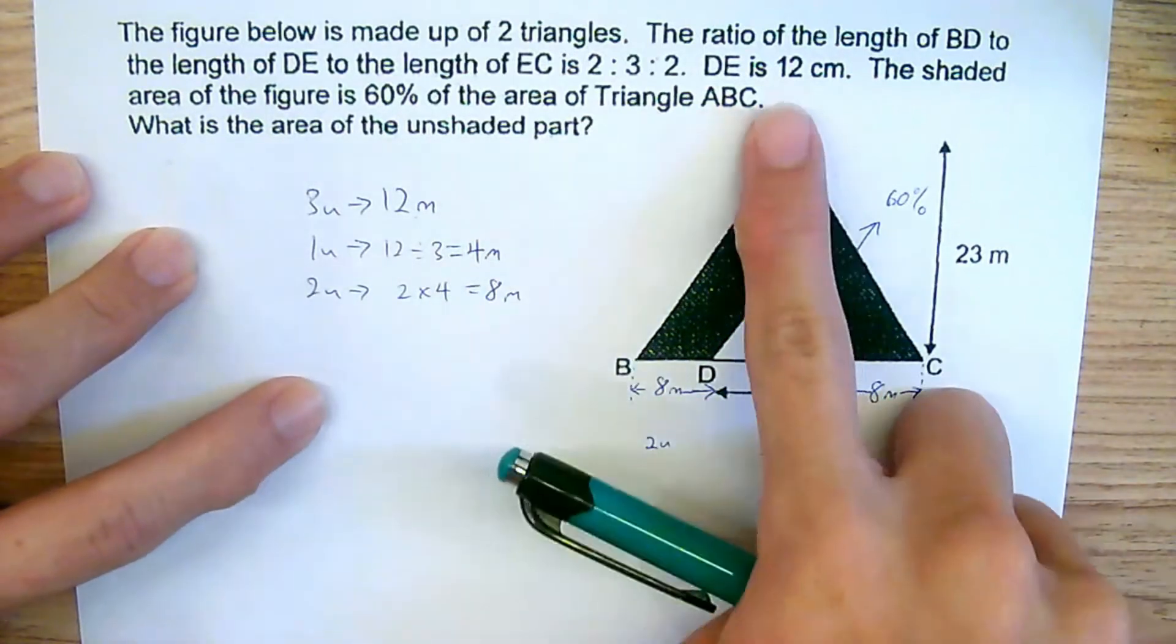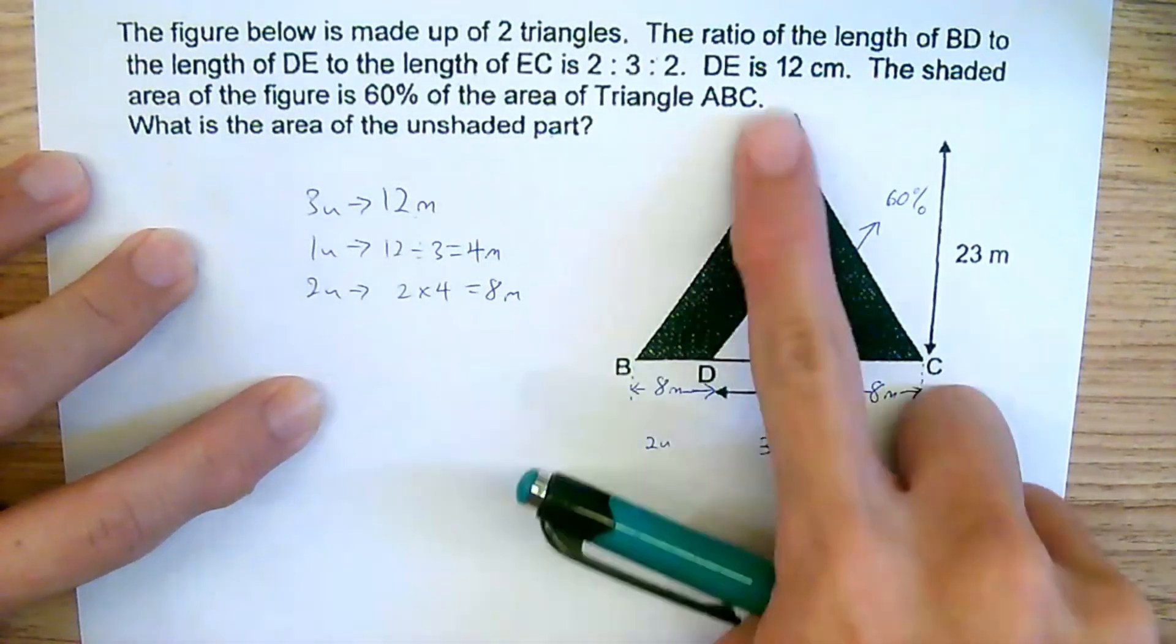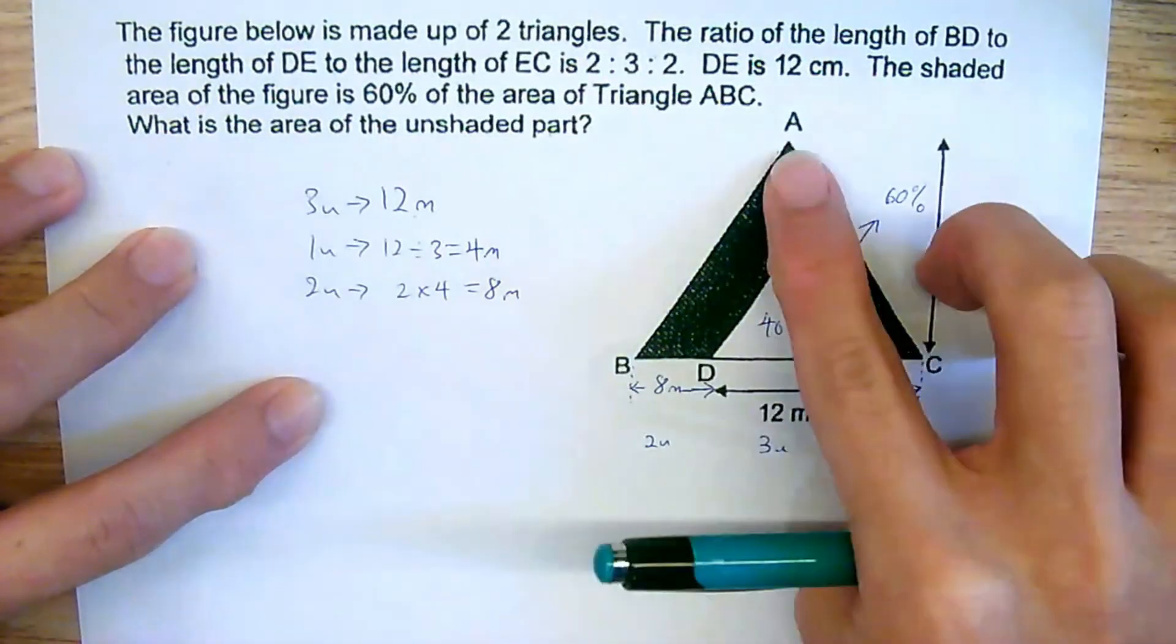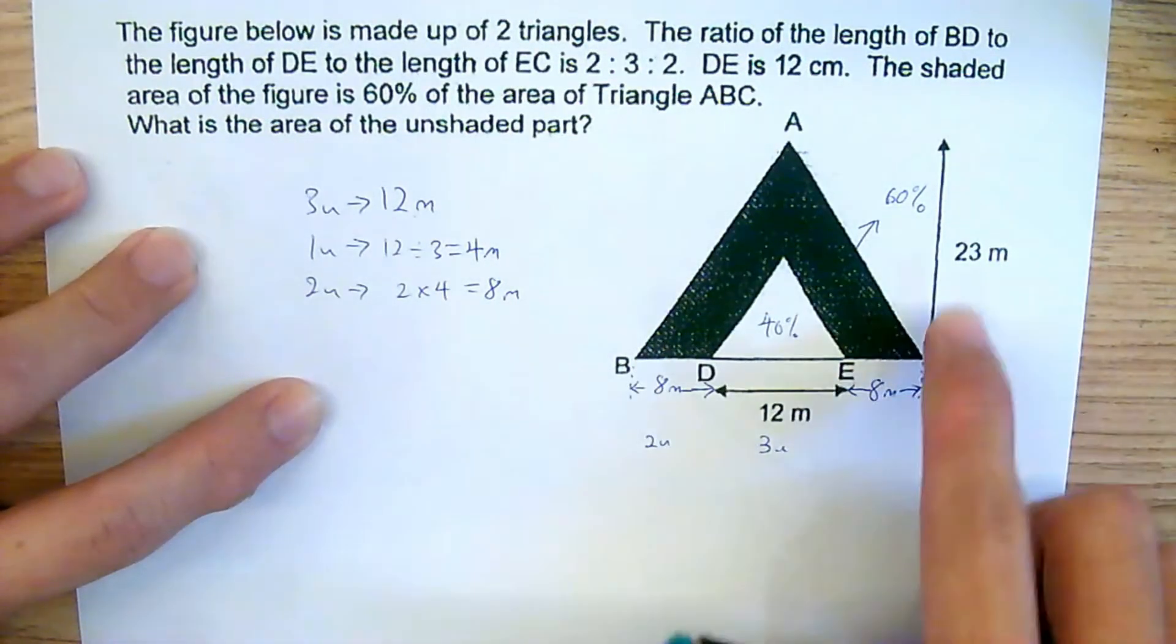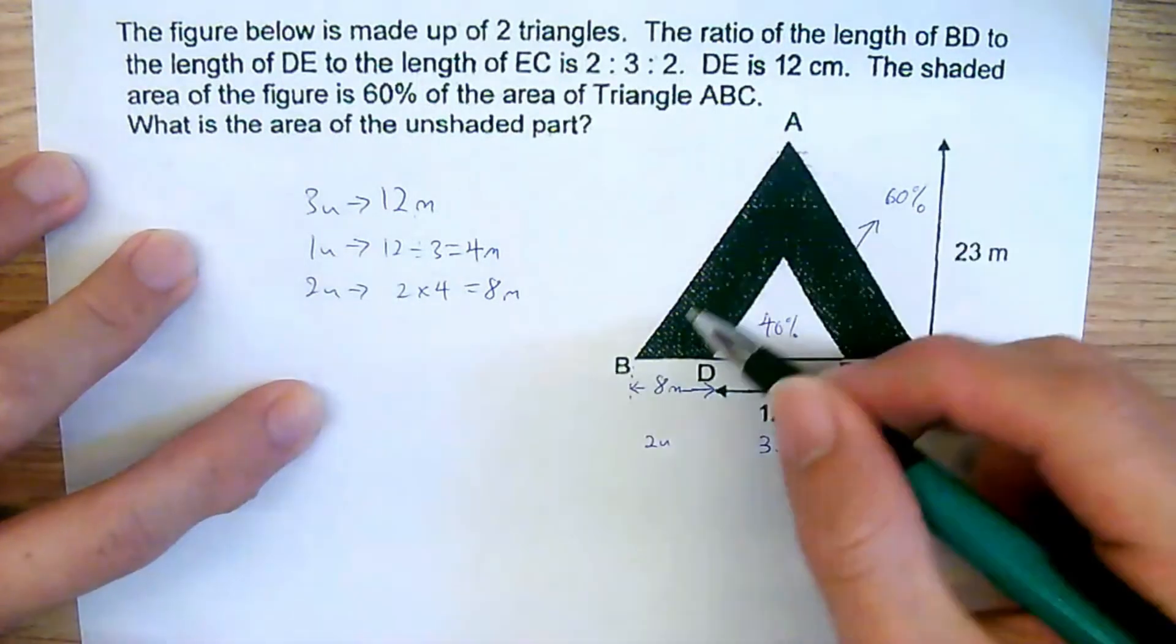With this information, actually we can find the entire area of the triangle. So the area of the triangle will be half times base times perpendicular height. So shall we just find ABC first?